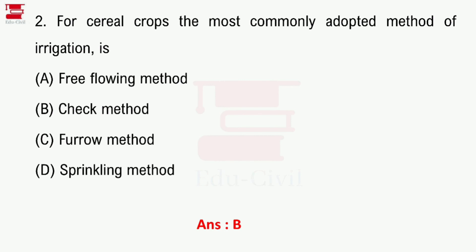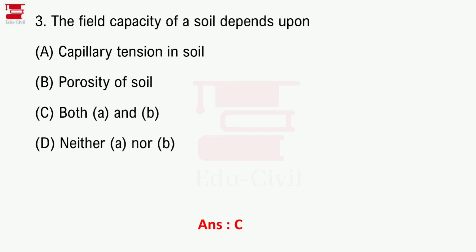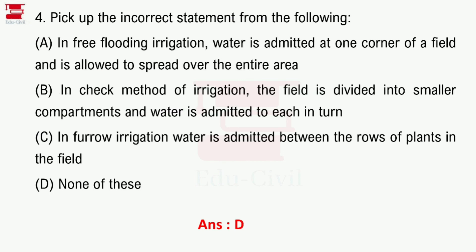Question 3: The field capacity of a soil depends on which factor? The answer is option C — capillary tension. The field capacity depends on capillary tension. Question 4: Pick up the incorrect statement from the following.